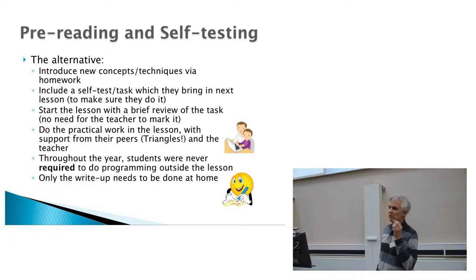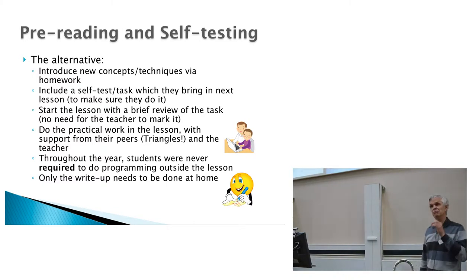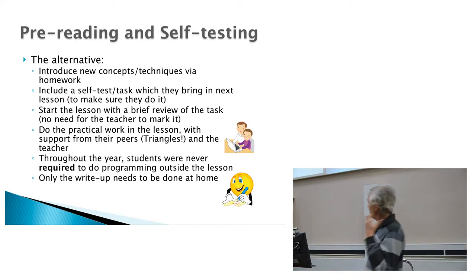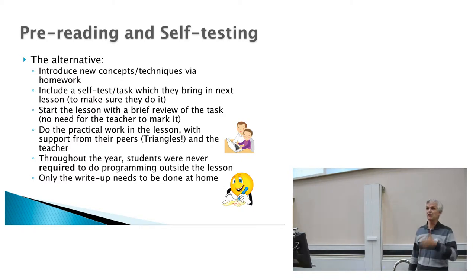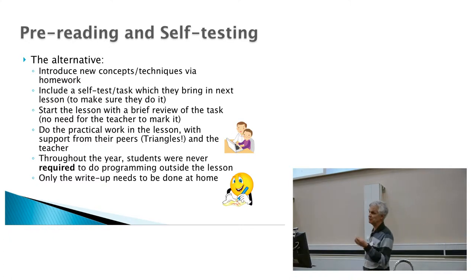And I took it to the extreme deliberately. I decided that I was not going to set them any programming for homework at all. They were never, in the whole year, required to program at home. Many of them did of course, enthusiastically keen, the more able ones do anyway. But the strugglers, the weaker ones, the less motivated, were always able to do the programming in the lesson with me and their peers there to help them. So by the end of the year I'd not once have actually said do this, write a program for homework. All the programming, the minimum requirement at least, they were able to do in the lessons.